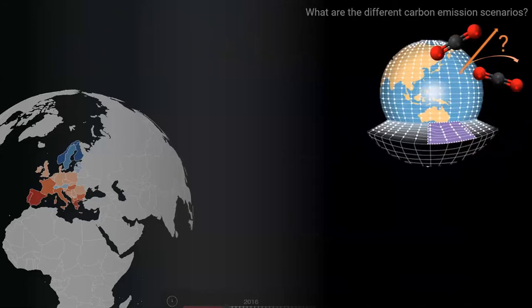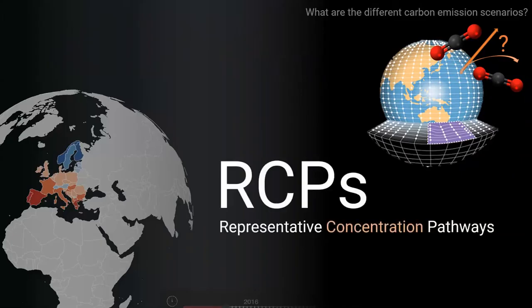Those who use climate models to project temperature changes into the future can run them under different carbon emission scenarios, and these have a technical name: representative concentration pathways, or RCPs for short. The word concentration means the models run based on the amount of carbon dioxide in the atmosphere due to the emissions that we generate.